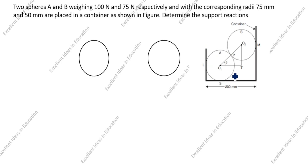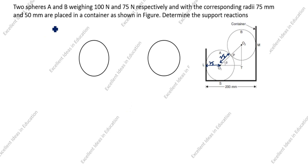You see the drawing: sphere A is 100 Newton weight and sphere B is 75 Newton weight respectively. The corresponding radii are 75 mm for sphere A — this radius is 75 mm. And 50 mm for sphere B — this is also 50 mm.